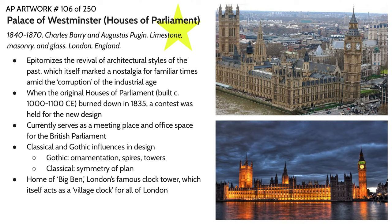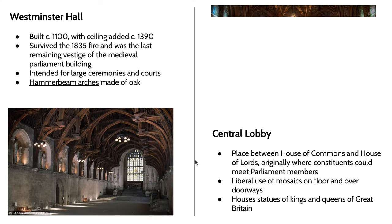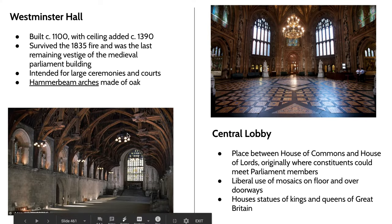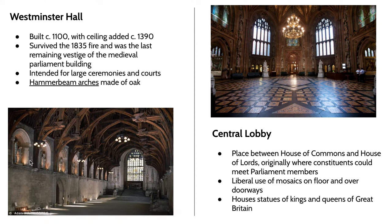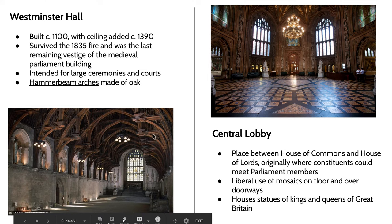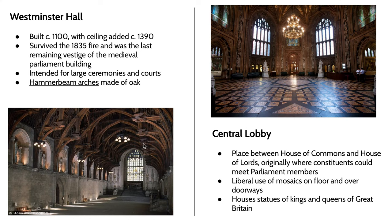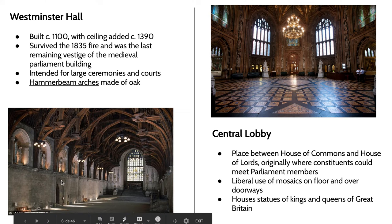Currently, the Houses of Parliament serves as a meeting place and office space for members of the British Parliament. Here's Westminster Hall — one of the only portions of the building that survived the 1835 fire. The ceiling was added in 1390. This is called a hammer beam arch, creating a very enlarged space where, instead of columns down the middle, we have additional fortifications enlarging the interior. This space was meant for large ceremonies and courts, and we can see Gothic elements like stained glass windows and pointed arches.